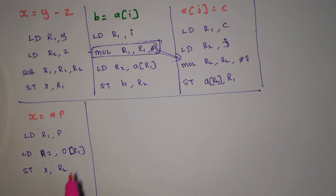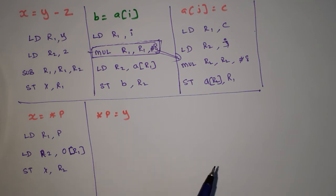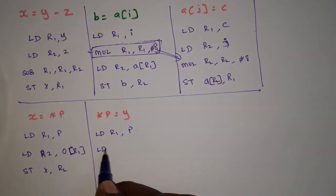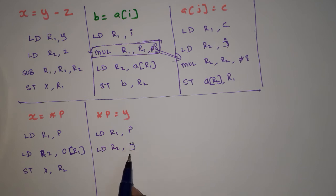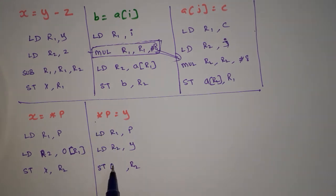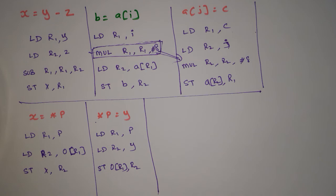Reverse pointer example: *p = y. First load p into R1: LD R1, P. Then load y into R2: LD R2, Y. Now store the value of y (in R2) to the address pointed to by p: ST 0(R1), R2, where 0(R1) denotes the address of p.